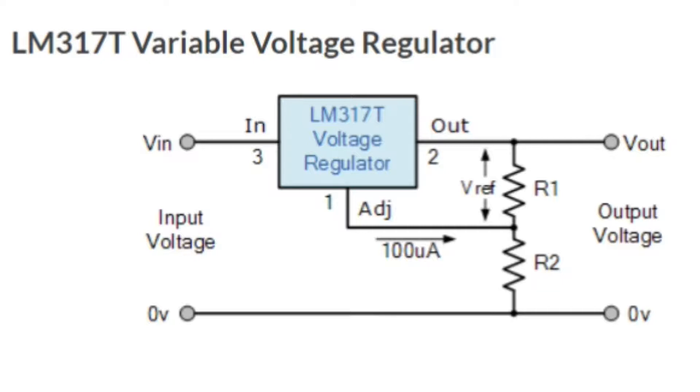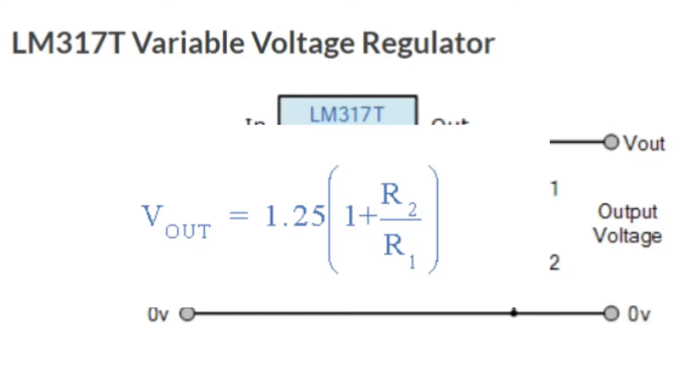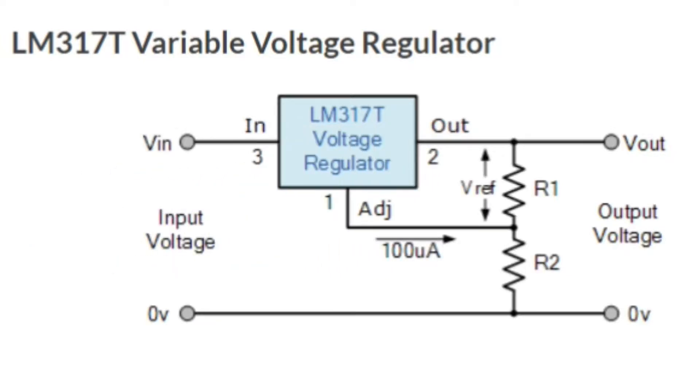This results in an output voltage which can be calculated using this formula. The input voltage Vin must be at least 2.5 volts greater than the required output voltage to power the regulator.